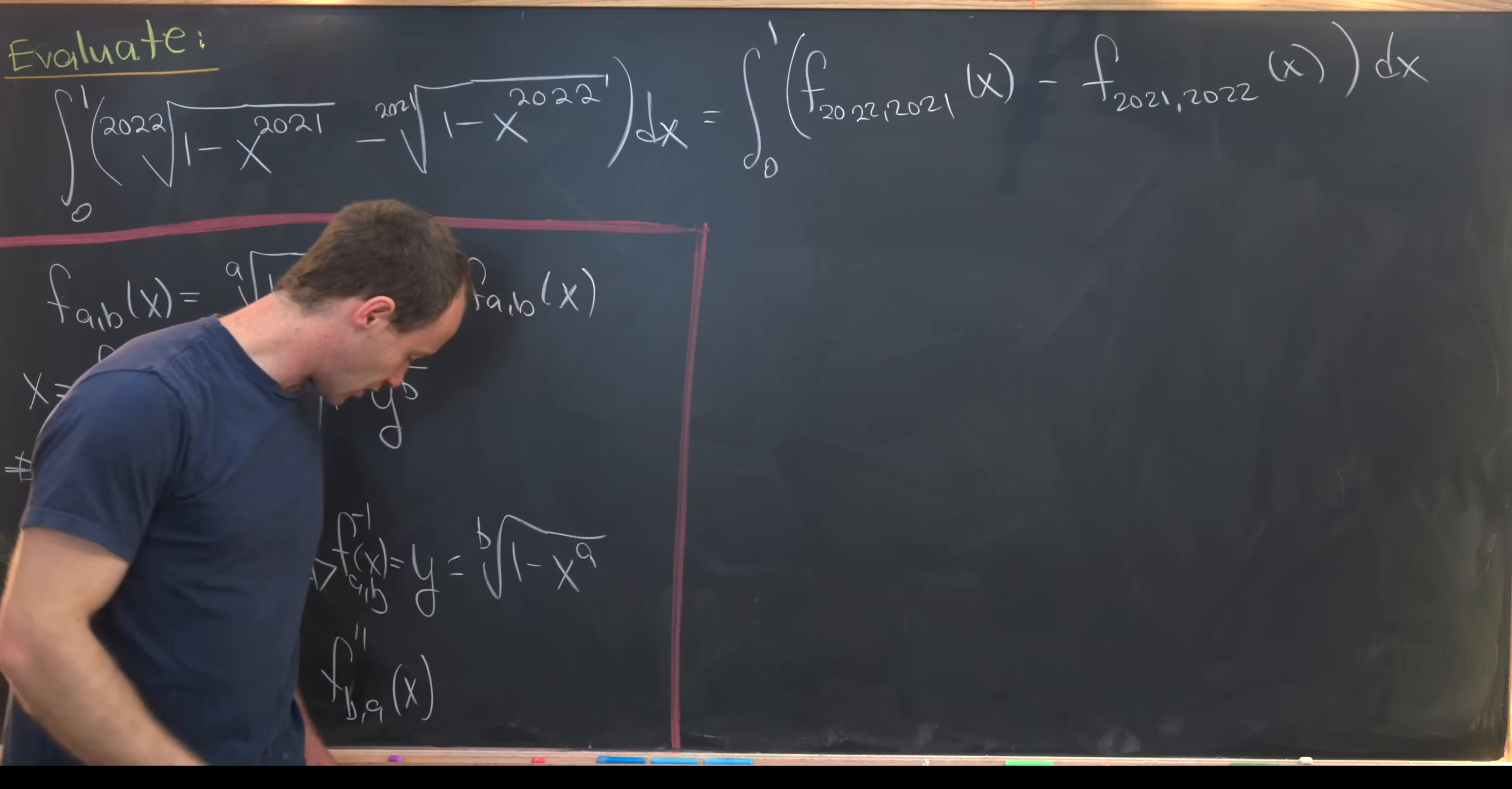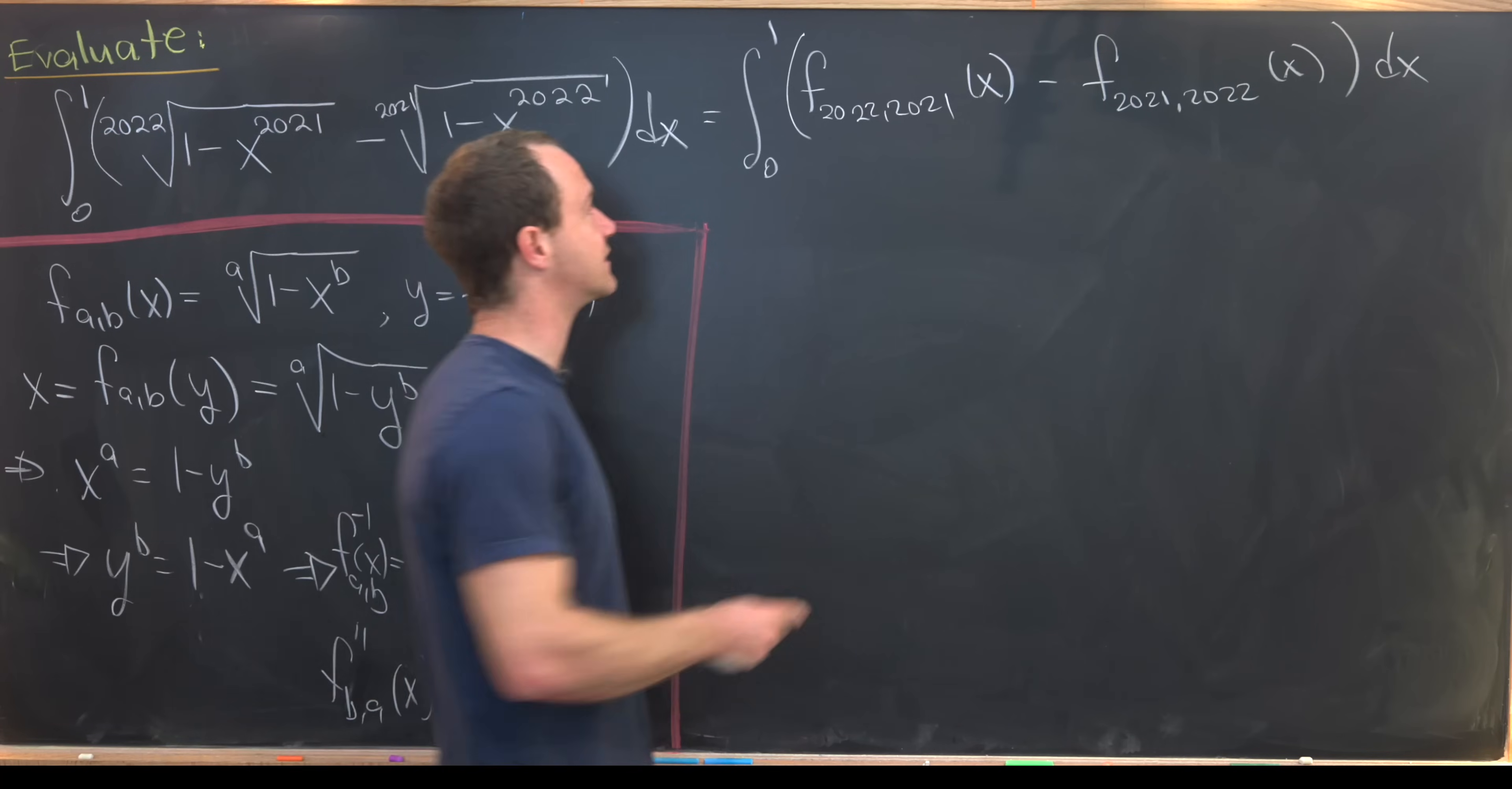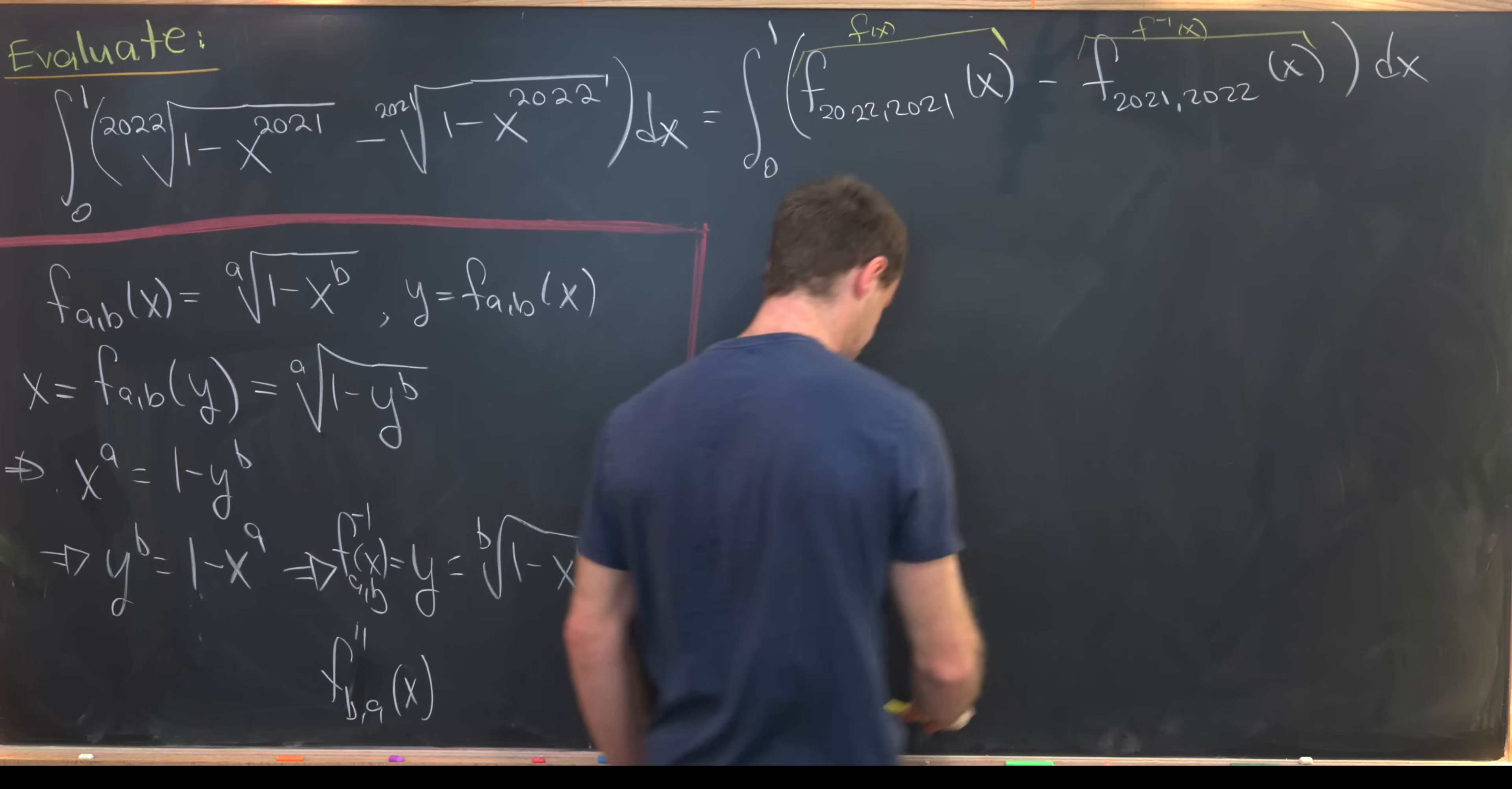But that's a little bit gnarly to work with. So let's introduce a little bit of notation since in our setup, we're only worried about the numbers 2021 and 2022. I'll take this guy and set it equal to f of x, then I'll take this guy and notice that it is f inverse of x.